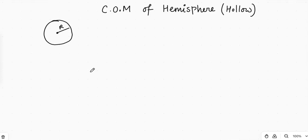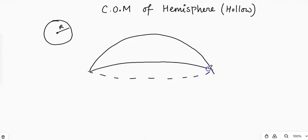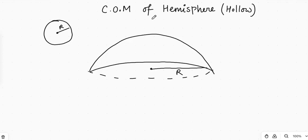Now what will happen if I have a hollow hemisphere like this? What is the position of the center of mass of this hollow hemisphere? Let's say the hollow hemisphere has a radius r. At what height from the bottom will be the position of center of mass? By symmetry, it will lie on this axis, because there is an equal half on both sides. But at what height — r/2, r/6, r/3 — we don't know. We have to find out.